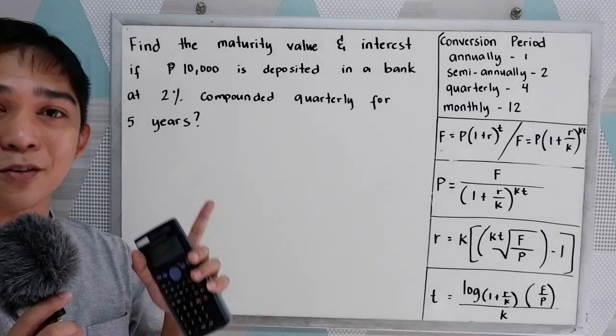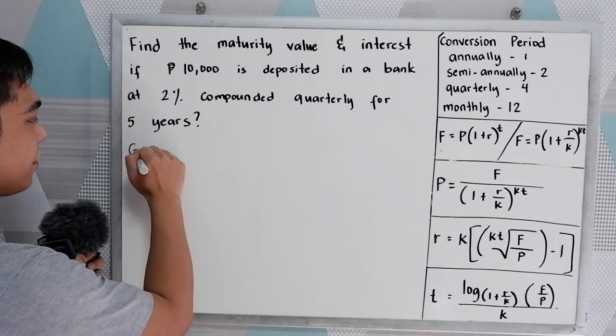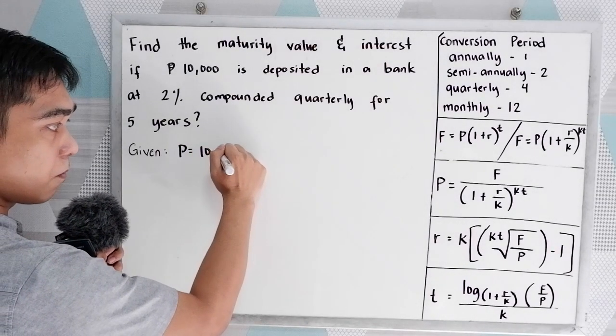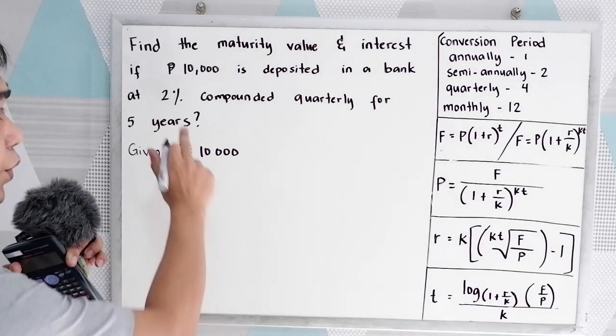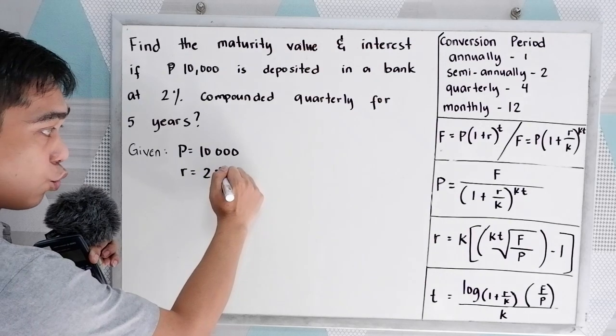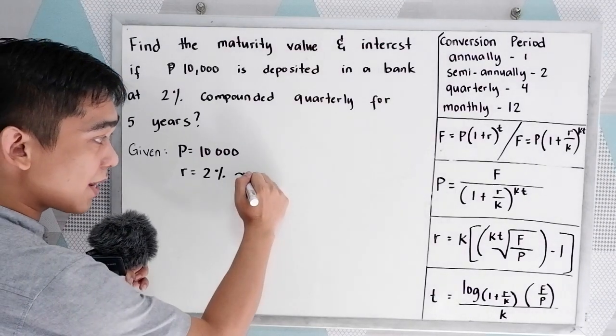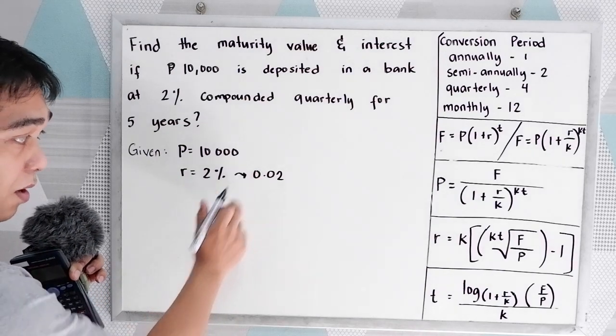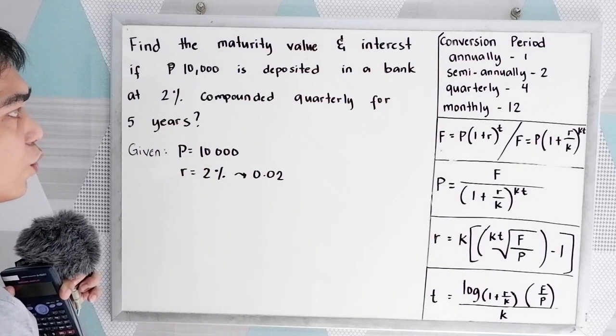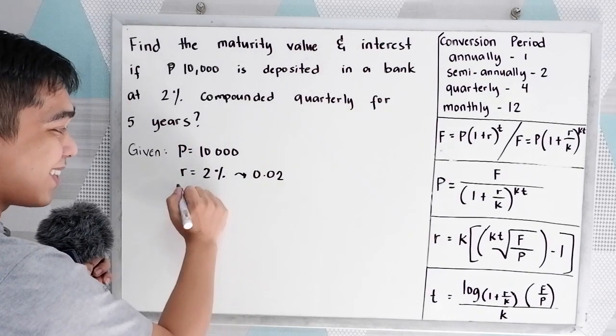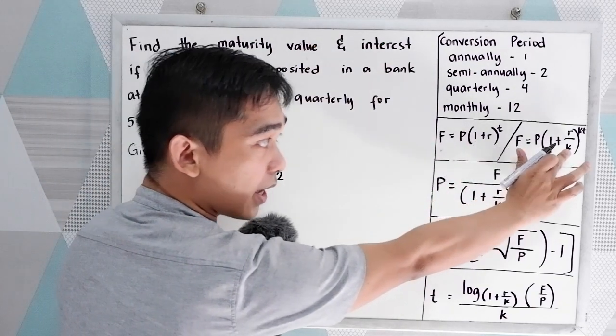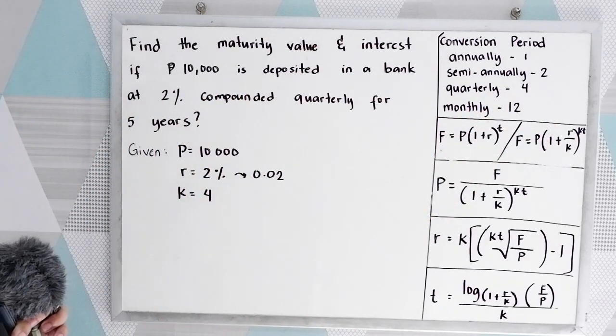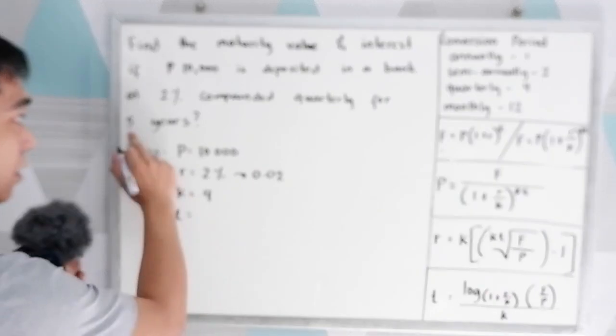To solve our problem, let's first determine the given. So our given, we have P10,000, that is our principal. We have 2%, that is our rate; 2% written in decimal, that is 0.02, just move twice to the left, then write the decimal point. Then we have compounded quarterly, so that indicates our K. In our conversion period, quarterly means 4. And our time, which is 5 years, or simply 5.